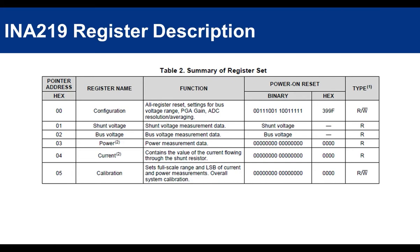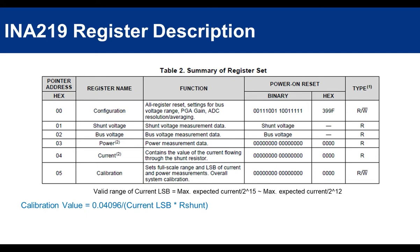The calibration register is used for current and power calculations which we can read from the current and power registers. Current and power flowing to the load can be calculated using these formulas directly from the values read from the shunt and bus voltages registers. However you can also obtain current and power values directly from the registers after setting the calibration register using this formula. Current LSB is the desired resolution of the current register value, and should be selected a value between maximum expected current divided by 2^15, to maximum expected current divided by 2^12. And of course the maximum expected current should be equal to or smaller than the current measurement range which was mentioned in the previous slide.